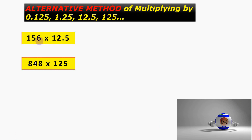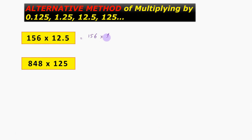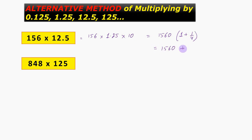The next question is 156 into 12.5. This can be written as 156 into 1.25 into 10, which is 1560 into 1 plus 1 by 4. Now, 1560 divided by 2 is 780, and 780 divided by 2 is 390. So, all we need to do is add 390 and 1560, thereby giving the answer as 1950.